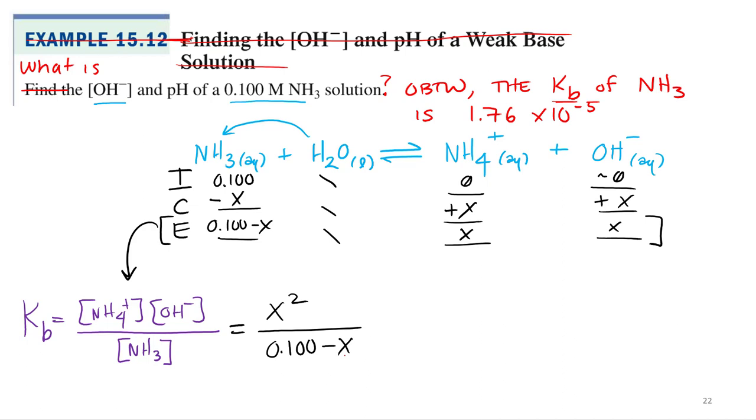Can we use the X is small approximation? Should we even think about using the X is small approximation? We have to use the quadratic formula! You've got to let me do my thing first. Can we do the X is small approximation? Yes. What do we compare? Initial concentration 0.1 to the KB 1.76 times 10^-5? Is that a small number? Yeah. That's 100,000 times smaller. So I would definitely bet that we can use the X is small approximation.